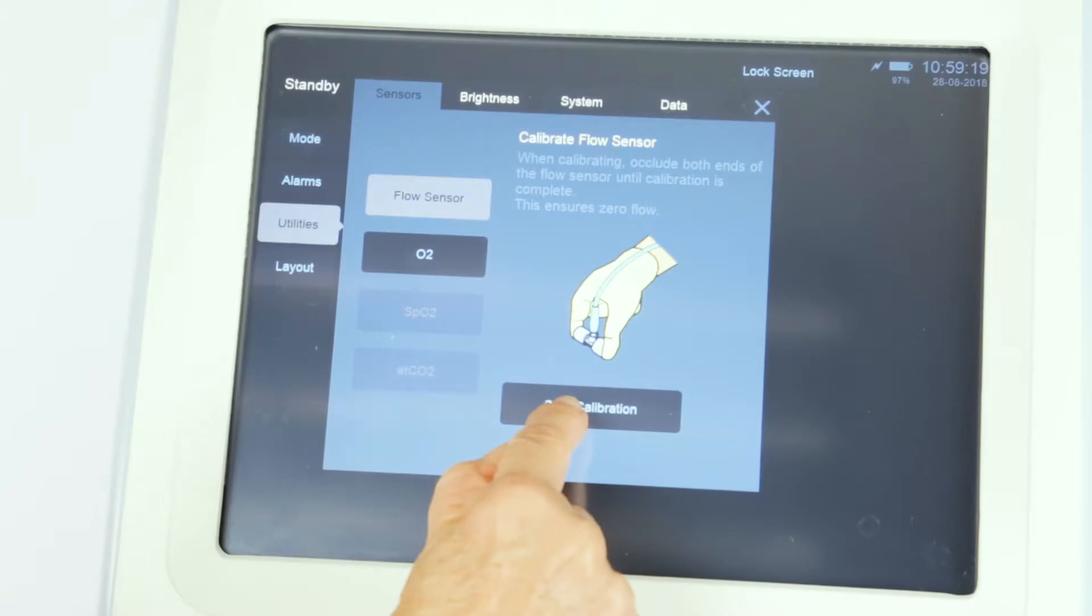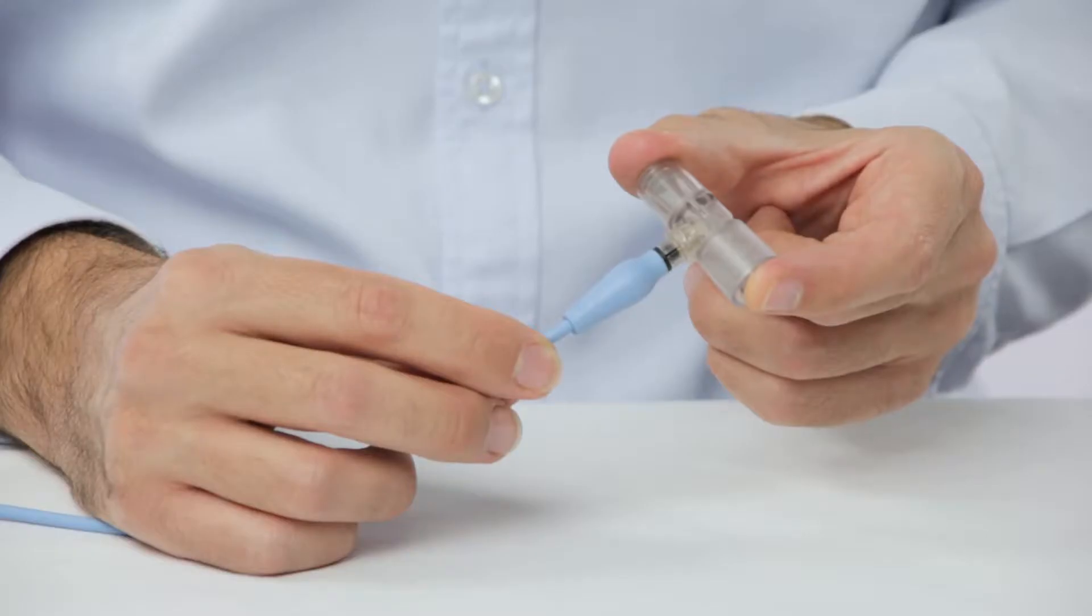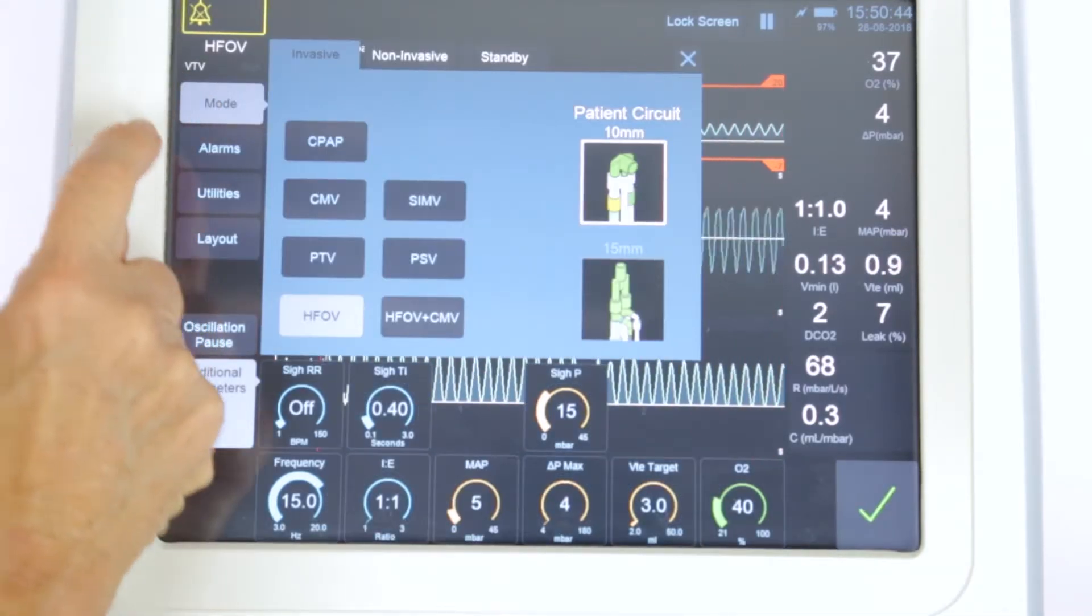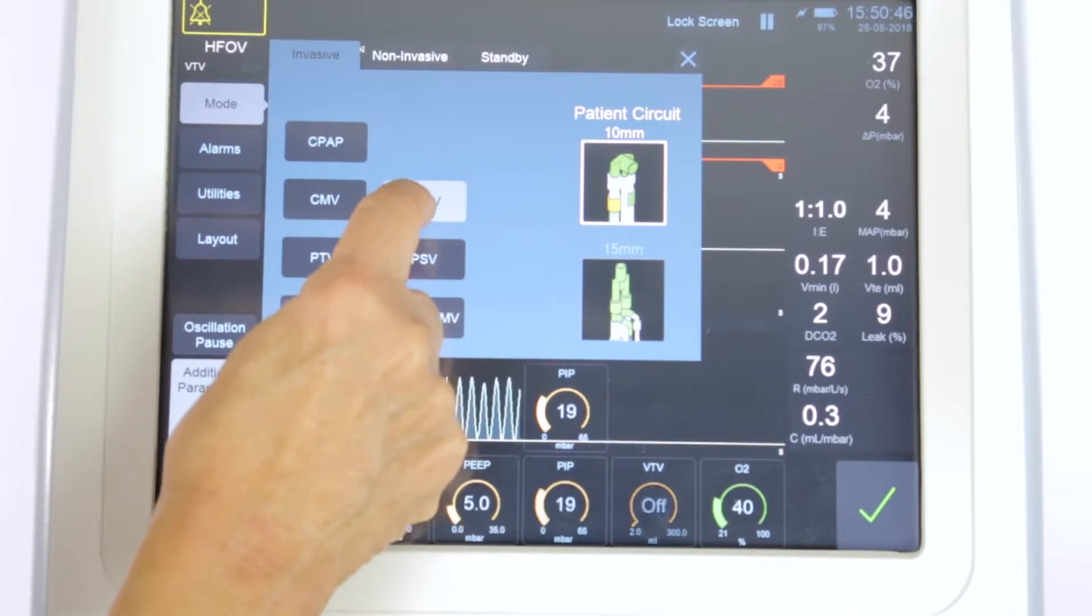Setting up SIMV. Once the flow sensor has been calibrated, go to the Mode Select button, choose Invasive Ventilation, and then select SIMV.